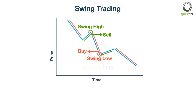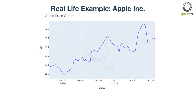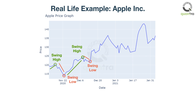This is not just a theoretical concept — it is seen in real life too. Let's take a look at the price graph of iPhone maker Apple Inc. At first, Apple's share price keeps increasing till $120 before declining on 16 November 2020. This is the first swing high. The price keeps decreasing till $114 before increasing again. This is the swing low. Similarly, a new swing high and low is formed at $124 and $122 respectively.